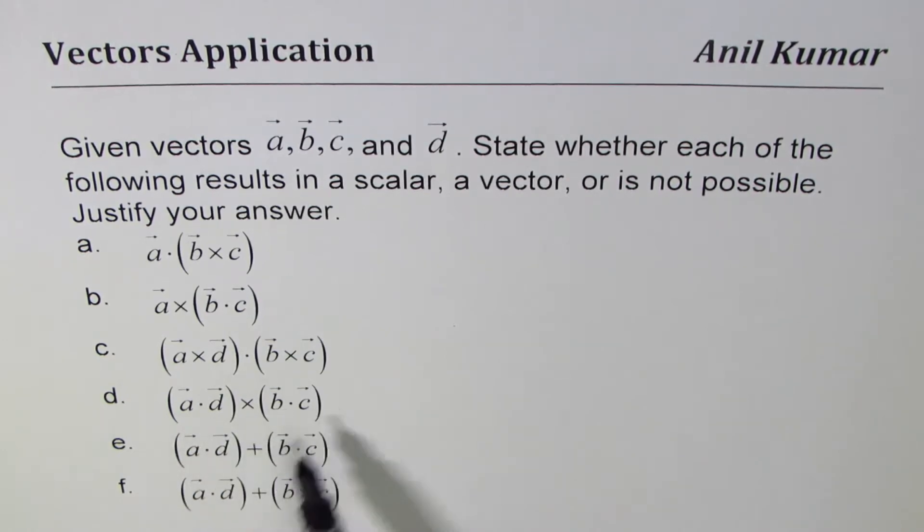(a·d)+(b·c), and (a·d)+(b×c). So there are different combinations - some of them are not valid, some will result in scalar quantities, some will result in vector quantities. You need to mention which ones will result in scalar, which ones will result in vector, and which are not possible.